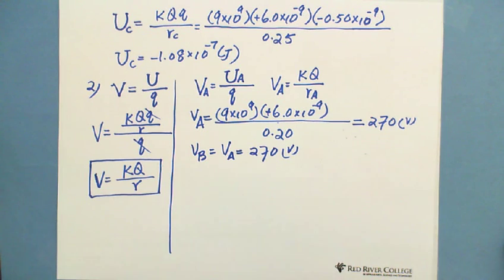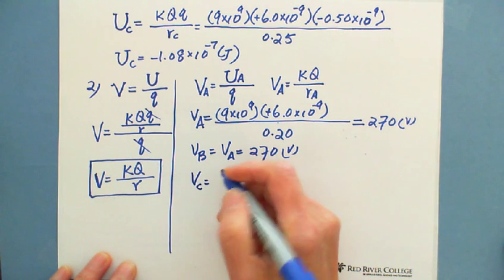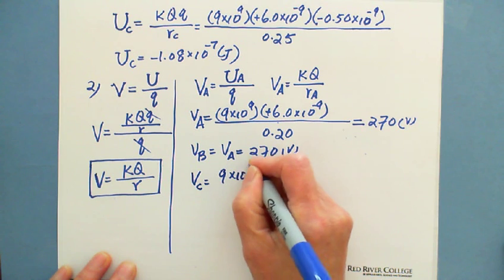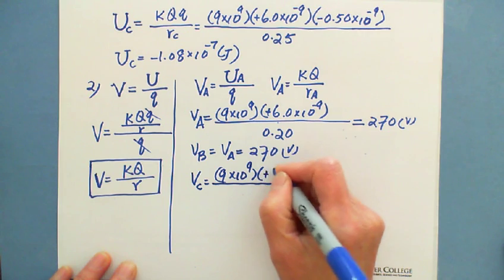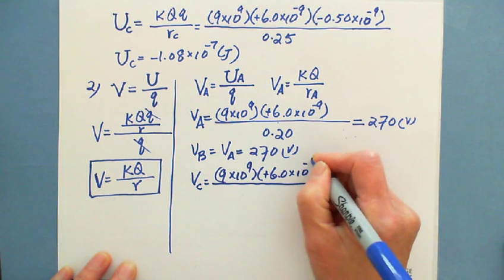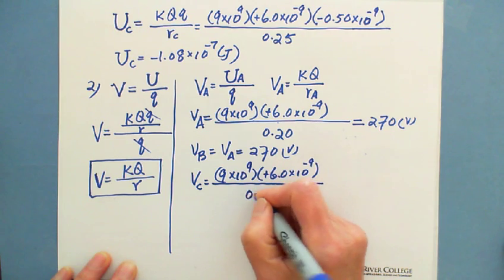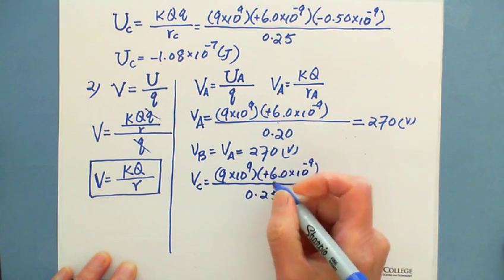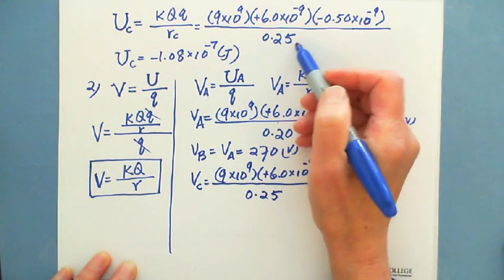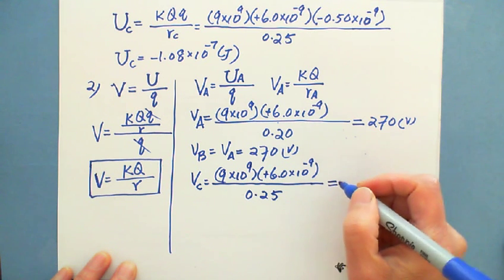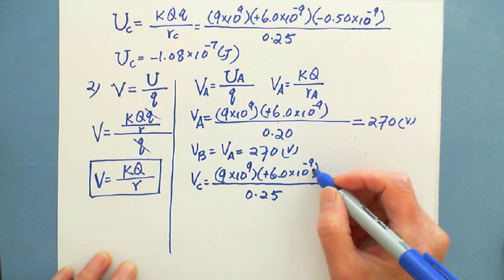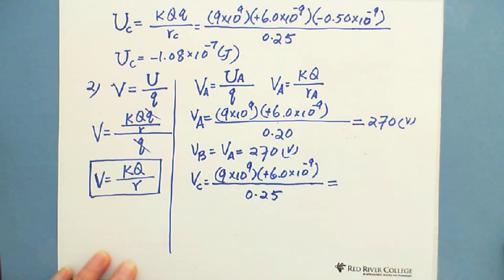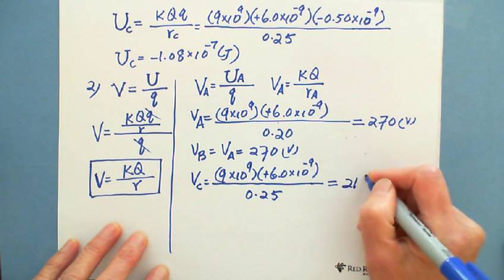For Vc: 9×10⁹ multiplied by 6.0×10⁻⁹, divided by 0.25, because the distance RC is 0.25 m. The 10⁹ cancels with 10⁻⁹, and we get the answer 216 — so Vc equals 216 volts.